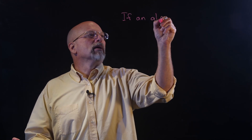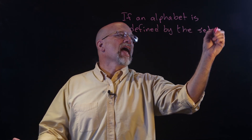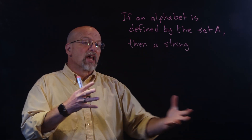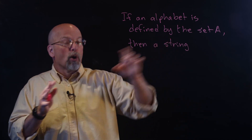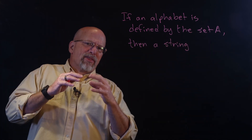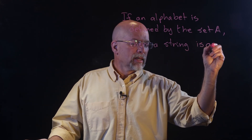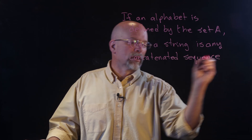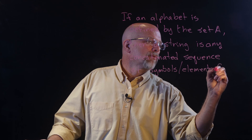Let's get back to those monkeys. If an alphabet is defined by the set A, then a string — it may help to go back to the lesson on sequences, since a string is basically a sequence — is an ordered set of elements from a set that can have duplicates, but it specifically has an order and a specified length. Then a string is any concatenated sequence of symbols or elements from A.